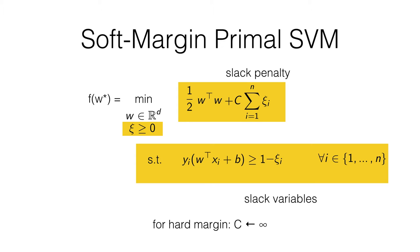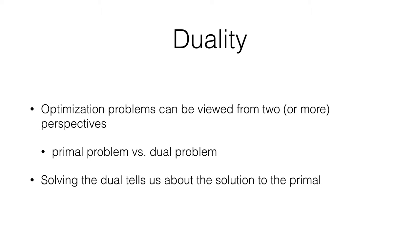Now we're going to talk about duality. The idea in duality in the context of optimization is that a lot of optimization problems can be viewed from two or more perspectives. There's the original problem — the primal problem — and then there are dual problems. There are actually many dual problems for any primal problem, but we'll focus on one type. If you solve the dual problem, you get information about the primal solution. In cases where you have strong duality, you can get exactly the primal solution, and that's what we're going to do — get the primal solution by solving the dual problem.